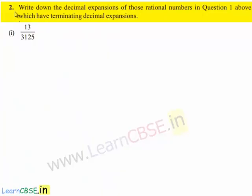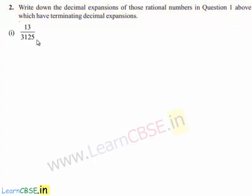Now let us move on to the second question. The question is: write down the decimal expansions of those rational numbers in question 1 above which have terminating decimal expansions. So let us take the first rational number, that is 13 upon 3125. It has a terminating decimal expansion as solved in the first question, so now we shall find its decimal expansion.